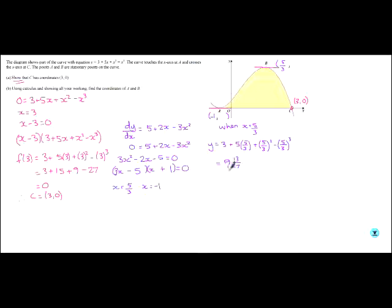Okay. So, that's this one. So, that's 9 and 13 over 27. Let's just put it underneath for now.